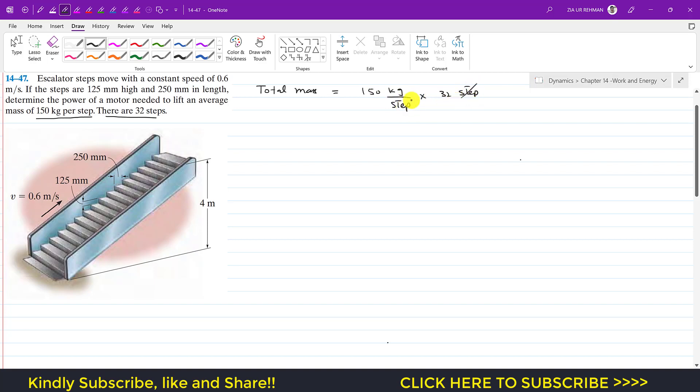Step will cancel out and we will be left with 150 times 32 kg. Now from this we can find the total weight that it must carry. That will be 150 into 32 times 9.81 in Newtons. So the motor must apply this much force.